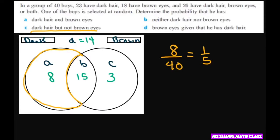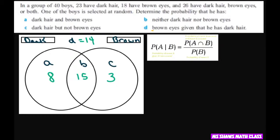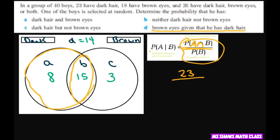And then we have one more. We have brown eyes, given that he has dark hair. So basically using this formula here, that's going to be probability of A and B, which is this part.